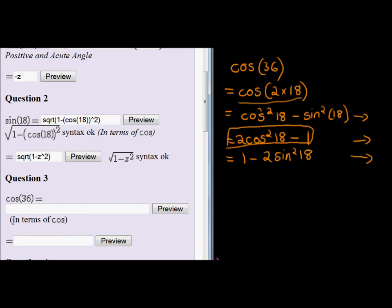Cos of 36. First, we need to write cos of 36 in terms of cos 18. So that would be 2 times cos of 18 squared. So remember that we take the whole cos 18 and square that minus 1. Let's just preview.